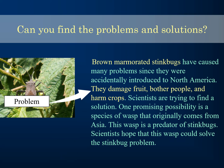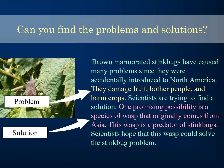The problem is that these bugs are damaging fruit, bothering people, and harming crops. The solution is that scientists are considering introducing a new wasp to the ecosystem — the author uses the word 'possibility' to signal a potential positive solution. As you can see, the author names a problem and then a solution.